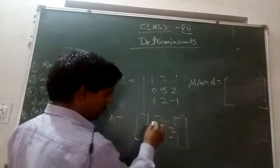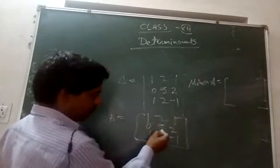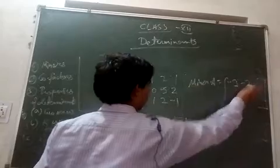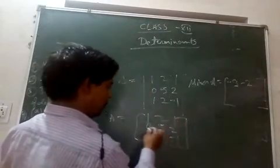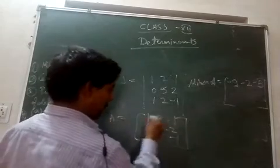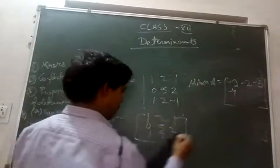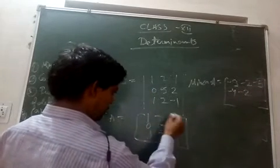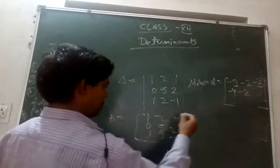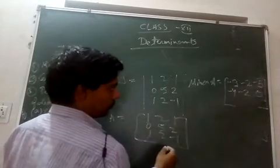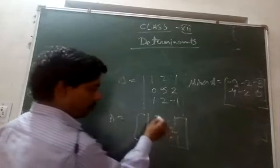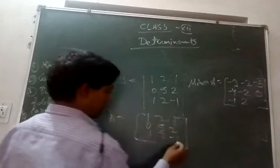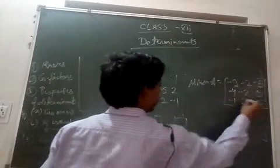Minor A is constructed by hiding all the row and column of a given element. For element (1,1), you hide the row and column and get -5 - 4 = -9. For element (1,2), you hide the column and get 0 - 2 = -2. For element (1,3), you hide the column and rows to get 0 - 5 = -5. Similarly you get 2 - 2 = 0, and 2·4 - 5 = for the remaining elements.